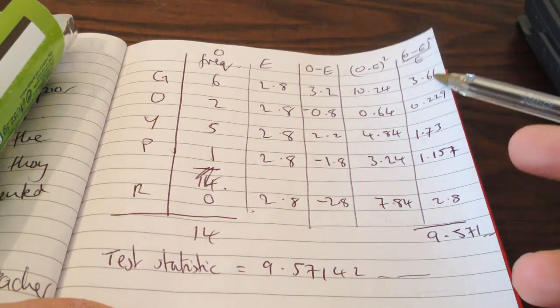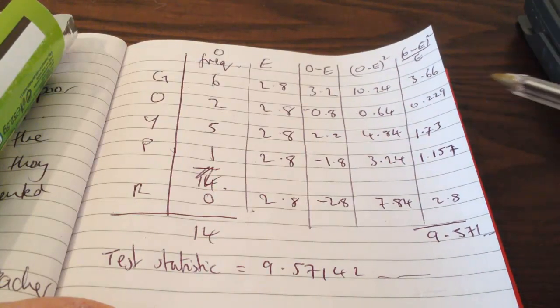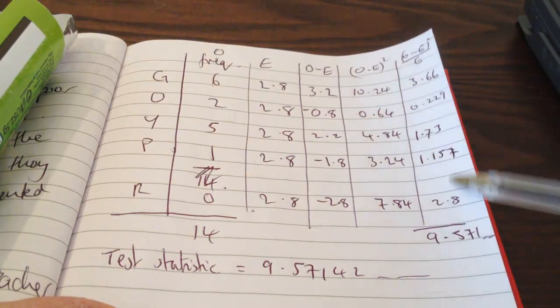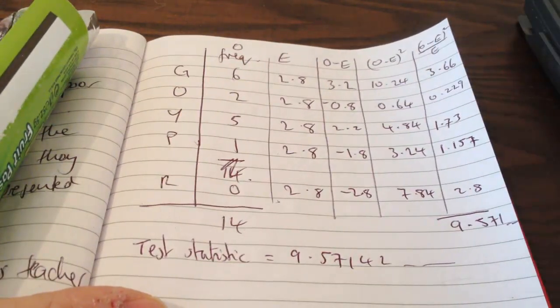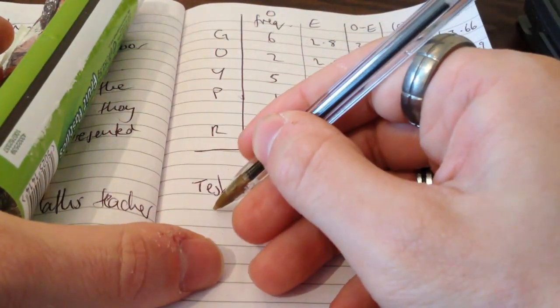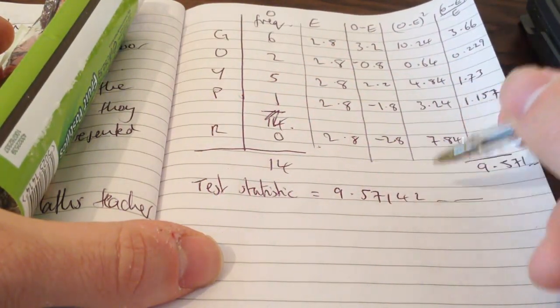So I've just finished doing those sums here. Putting them all into the calculator, I've left them with much more decimal places on the calculator and added them up with the unrounded versions. And I come up with 9.571. I'm doing the chi-squared test. I don't think I've told you that yet. So my chi-squared test statistic is 9.57142.